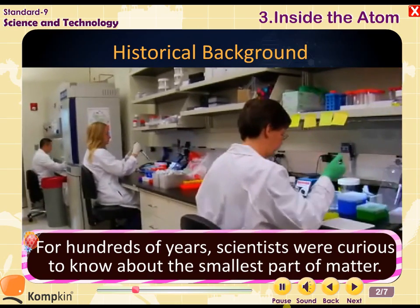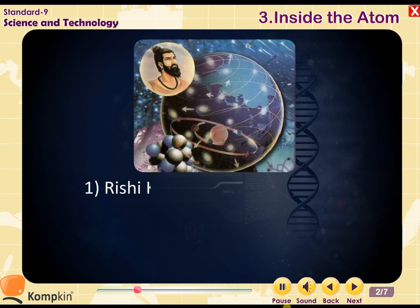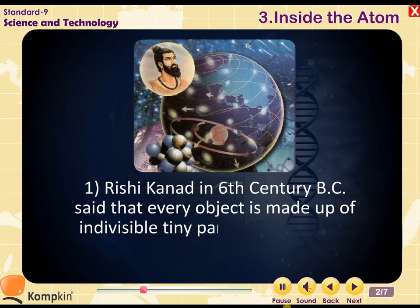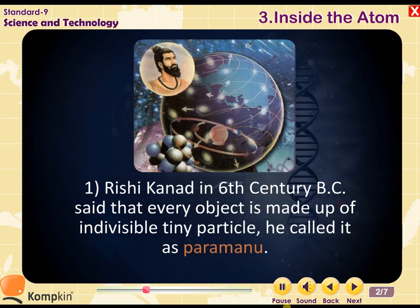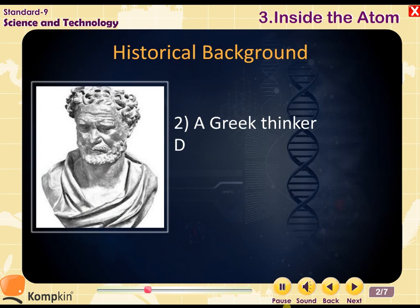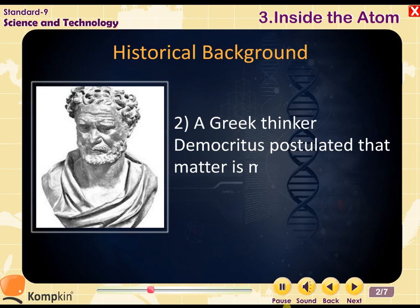For hundreds of years scientists were curious to know about the smallest part of matter. One Rishi Kanad, in the 6th century BC, said that every object is made up of an invisible tiny particle. He called it Parmanu.